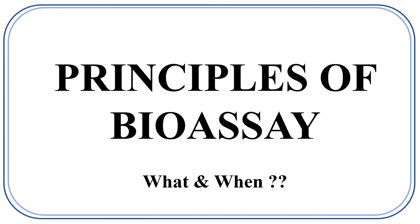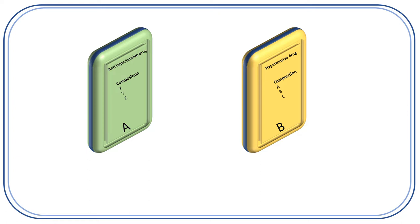Principles of Bioassay: What is Bioassay and when should we use it? Let's say you have two drugs, two similar looking drugs. One is antihypertensive and another one is hypertensive. Both the drugs have different compositions and different pharmacological actions. But how would you differentiate amongst them? The answer is Bioassay. Bioassay is a technique used to differentiate the active principle, or the concentration-based difference, among different preparations.